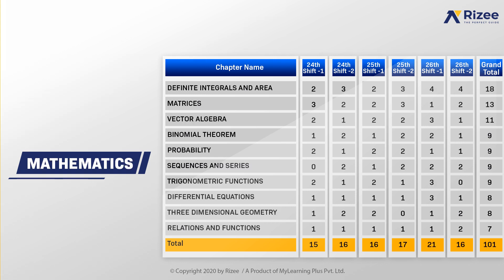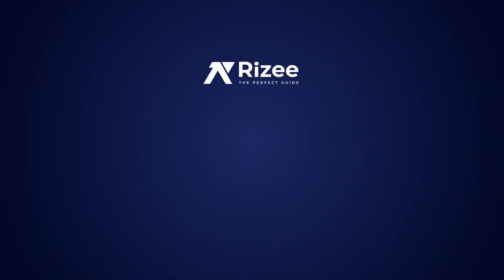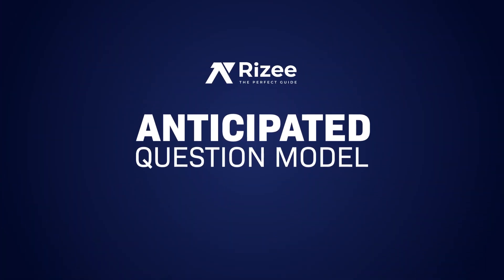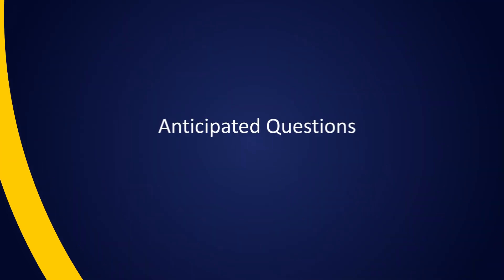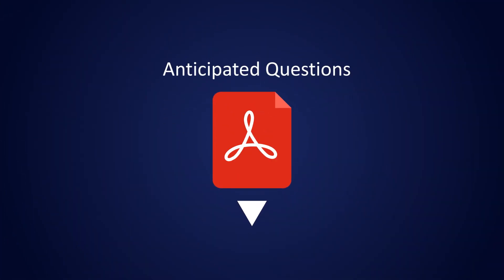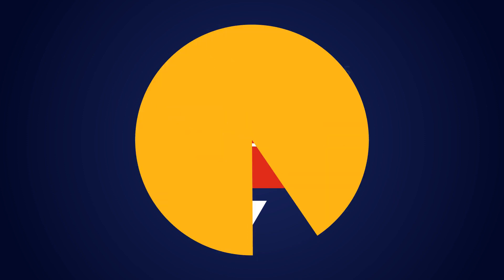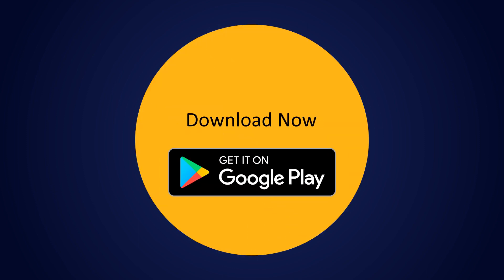In mathematics, out of 180 questions, 101 questions came from the top 10 chapters introduced in the JEE Mains anticipated question models for February. For the JEE Mains March exam, RISE is proudly announcing anticipated question models for March. These question papers are available in the description and you can download them to get ready.